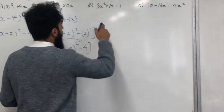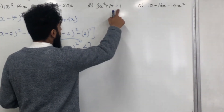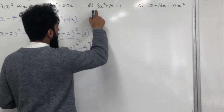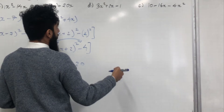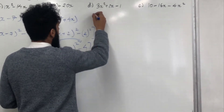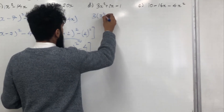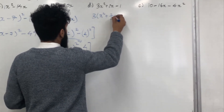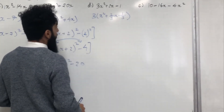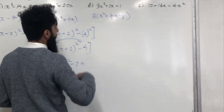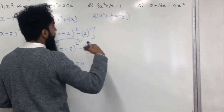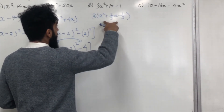Moving on to Part D. We want to complete the square on this quadratic. The first step is to check the coefficient of x squared — in this case it is 3. So we need to first factorize. We take out 3, giving 3(x squared + (2/3)x − 1/3). Looking at the coefficient of x squared inside the bracket, it is 1, so we can proceed forward and complete the square on the quadratic inside the bracket.